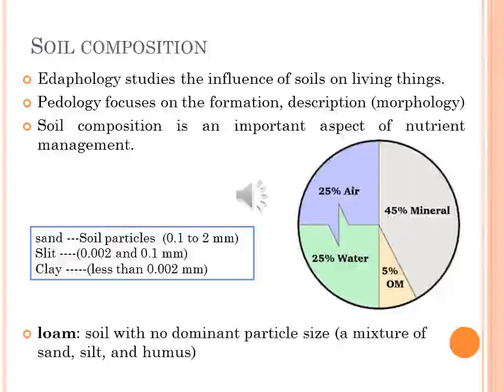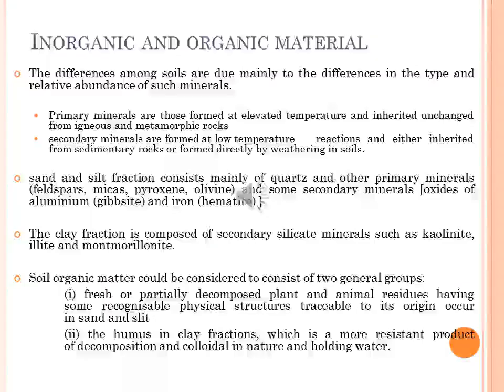Soils that have no dominant particle size contain a mixture of sand, silt, and humus. Humus, as defined in previous lectures, is a large group of naturally occurring organic compounds found in the soil, composed of decaying plants and dead and living microorganisms. The inorganic component, or mineral matter, of the soil is composed of many types of minerals that influence the properties of the soil.